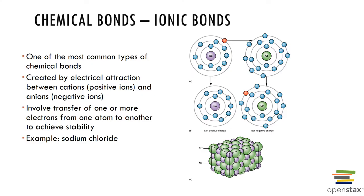An ionic bond is created by the transfer of electrons from one atom to another. Ions are formed by transfer of valence shell electrons. An anion has gained one or more electrons and has a negative charge; a cation has lost one or more electrons and has a positive charge. Sodium chloride is a good example — sodium with a positive charge combines with chlorine with a negative charge to form a balanced molecule, sodium chloride. Ionic compounds often form crystals.